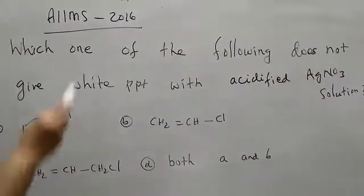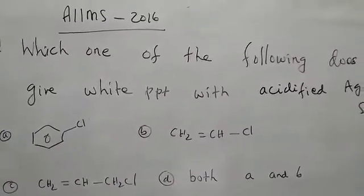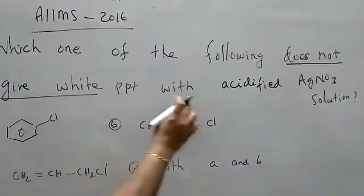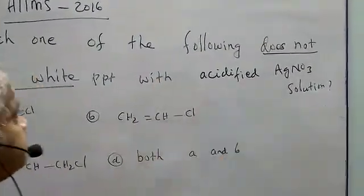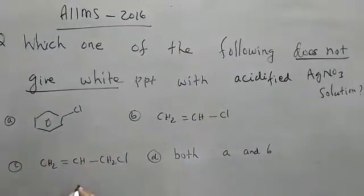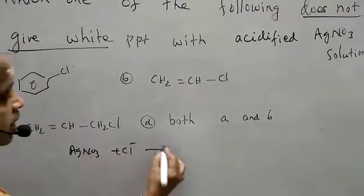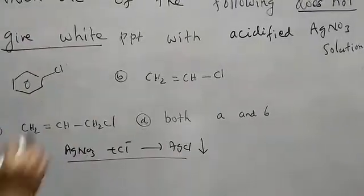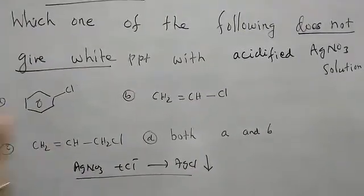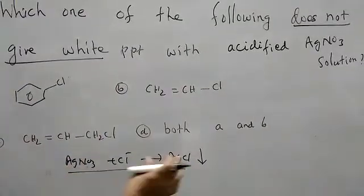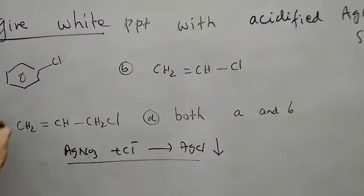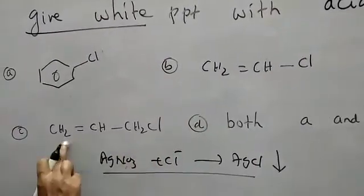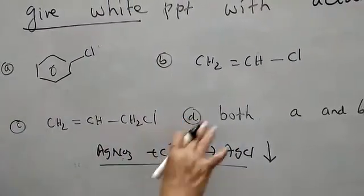Related to this point, there is a case question from 2016: which one of the following does not give a white precipitate with acidified silver nitrate solution? The chemistry behind it is: silver nitrate plus halide gives silver chloride as a white precipitate. The four options are: A — chlorobenzene, B — vinyl chloride, C — allyl chloride, and D — both A and B.